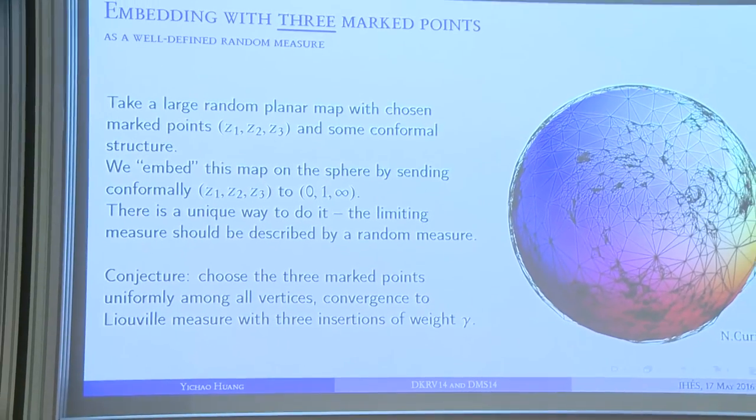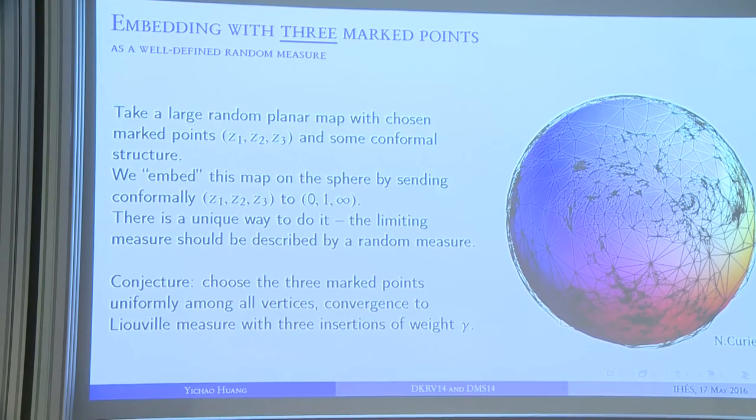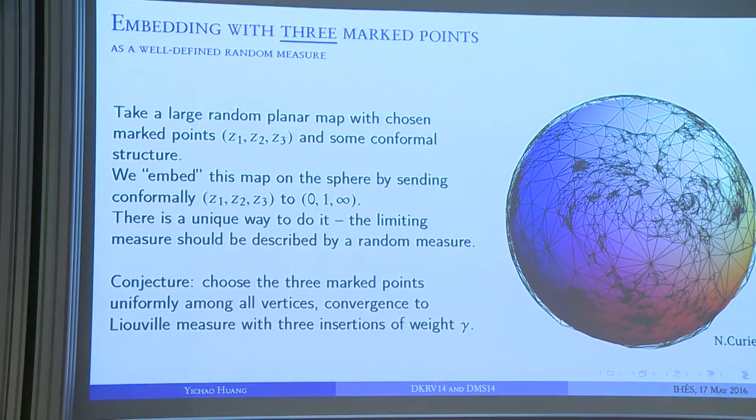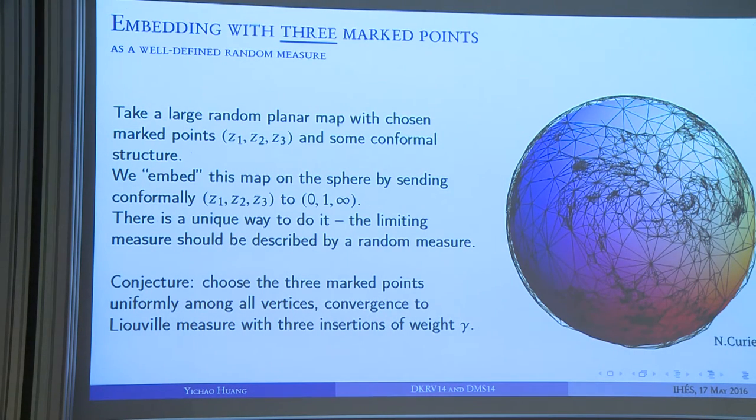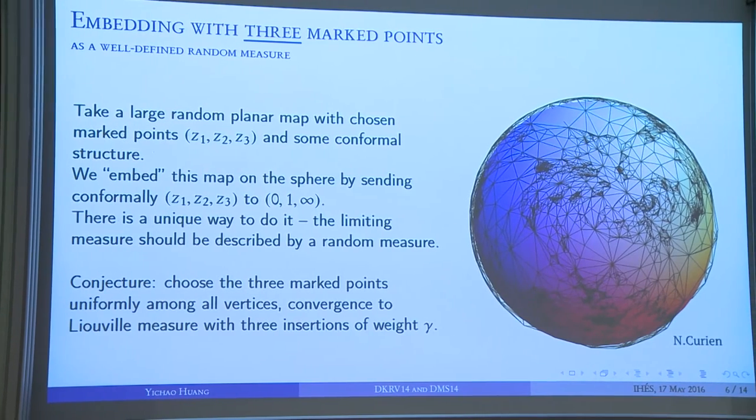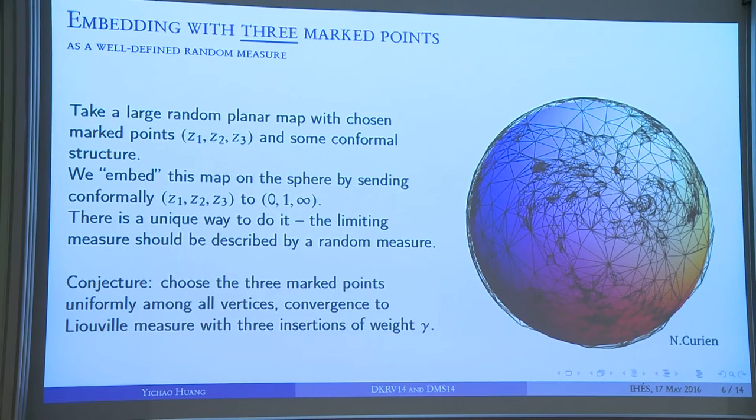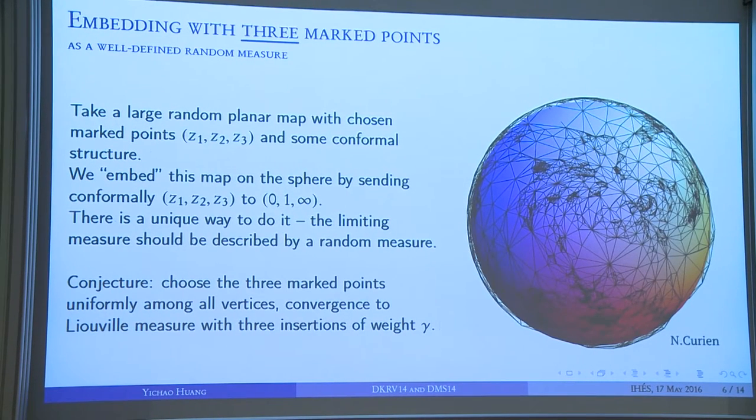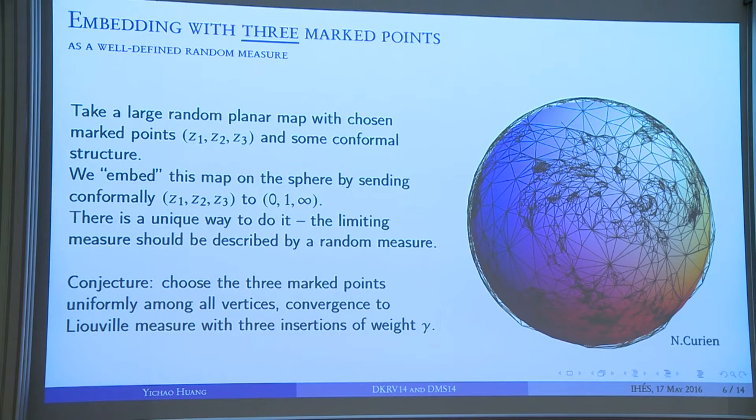We will talk about the conjecture of random map and the measure on the sphere. The conjecture is that if you take a very large random map and you choose three vertices uniformly on the map, and you map these three vertices to zero, one, infinity on the sphere, then in the limit you should get a random measure. This is a simulation by Curien.